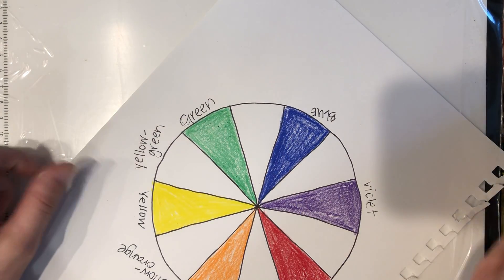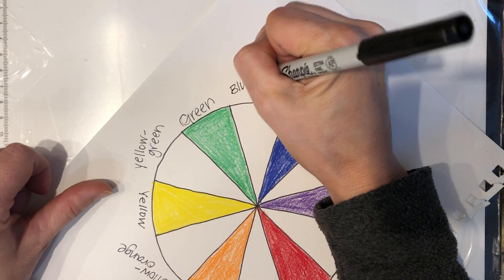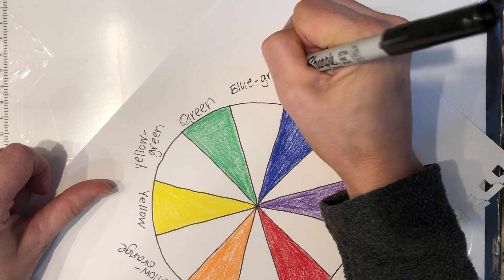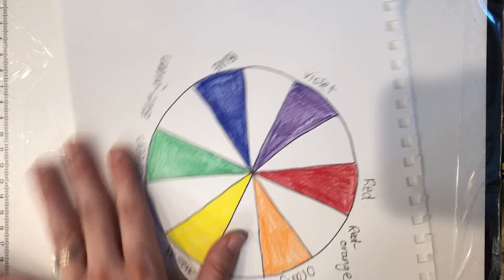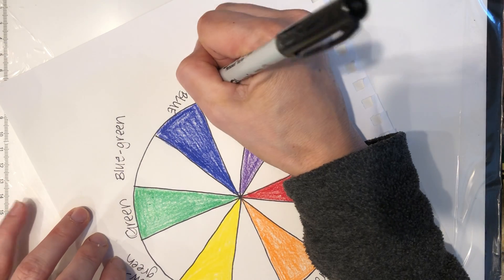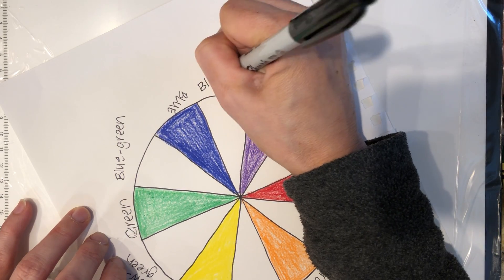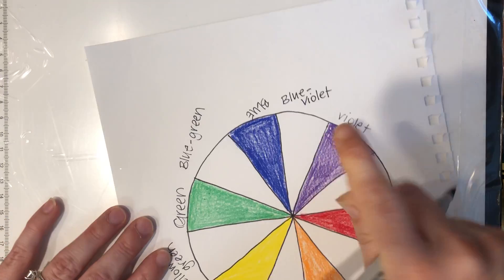Turn. I have blue and green. The name of the primary is blue, so it's blue-green. This is the one we talked about that is also aqua, teal, turquoise. That is blue-green. Turn it again. I have blue and violet. Blue is the primary color of the two, so the name of it is blue-violet. You would know this as indigo.